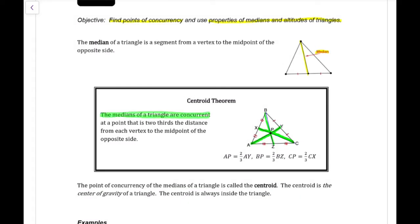Now there's a special property with centroids. If you take the median of any one of these angles of the triangle, it is going to be broken up in two-thirds and one-third. So the longer side is two-thirds of the whole thing and the shorter side is one-third. So I have AP is two-thirds of AY and PY would be one-third of AY. This happens with all of the sides of the triangles.